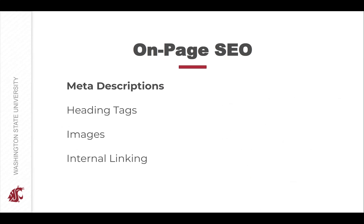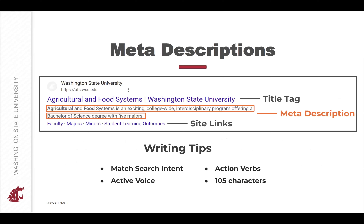Now we're going to go through a few on-page SEO things you can do to optimize your site. First is meta descriptions. A meta description is a short summary of your page that can appear below the title tag. 'Can' is an important word because Google may not always display the meta description you set — sometimes they override it and generate the description they think will work best for users. It's also worth mentioning that meta descriptions aren't a direct ranking factor, but a well-written meta description can encourage users to click on your site.